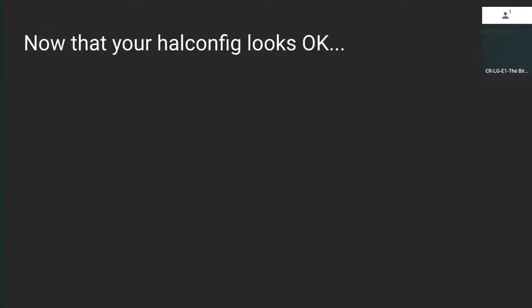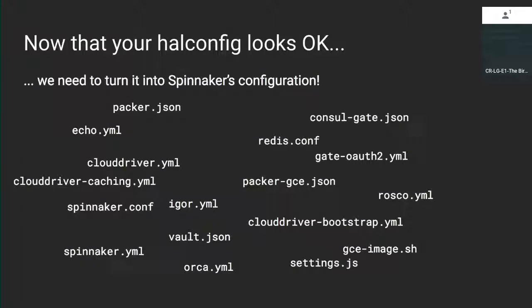Now that Halyard has done all the heavy lifting of making sure everything configured will look okay, it's time to generate all that configuration inside Spinnaker. This is just a small subset of the files — a typical deployment Halyard will generate 50 to 100 files. That's a pain to manage yourself, which is why it's really nice to have a tool that does all this in one spot for you.